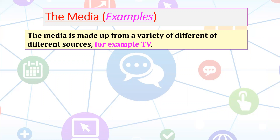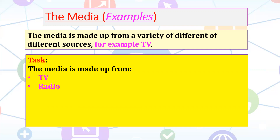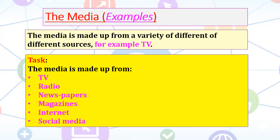The media is made up from a variety of different sources. I want you to note that down and make a list of all the different things which you think make up the media — I'll start with TV. Pause the video and give yourself a couple of minutes to note down all the things which make up the media. So we've got TV — probably the most obvious and popular one — but also: the radio, newspapers, magazines, the internet, and social media. These are the key ones you'll need to think about in terms of the media and its involvement in sport.